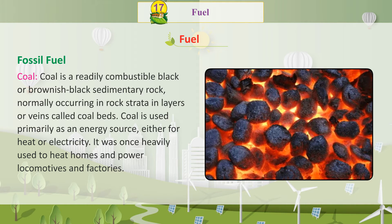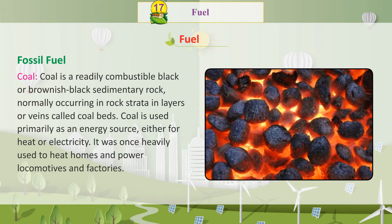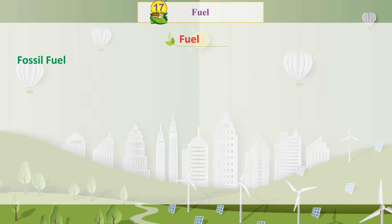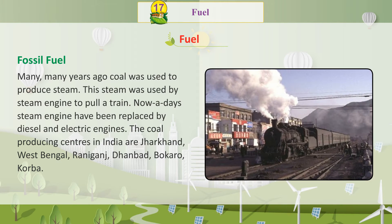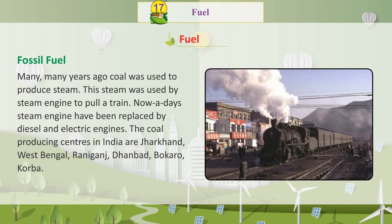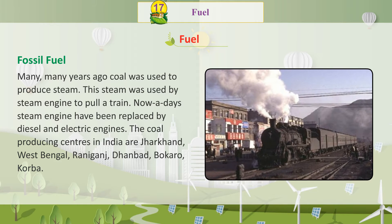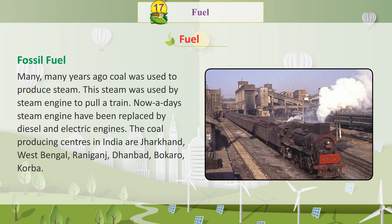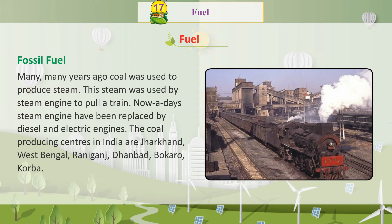Coal was once heavily used to heat homes and power locomotives and factories. Many years ago, coal was used to produce steam. This steam was used by steam engines to pull a train.